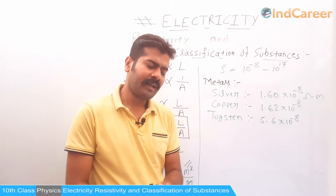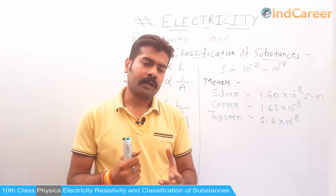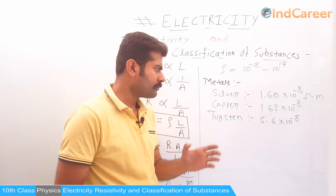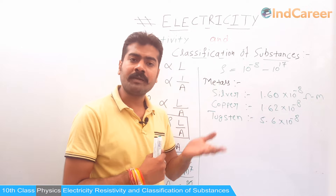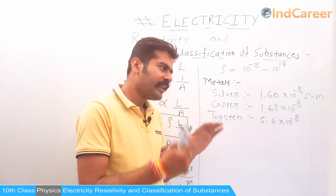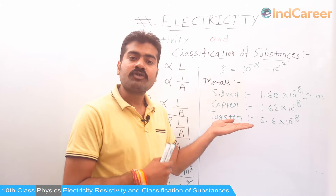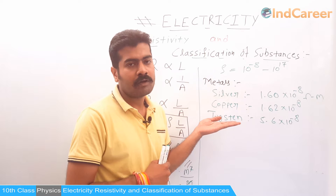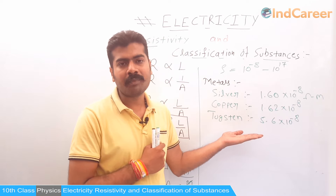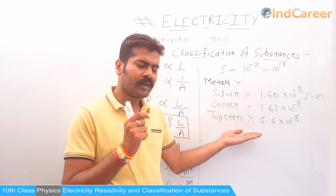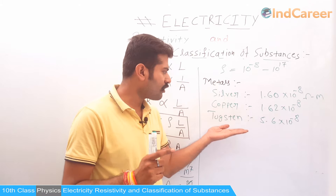A common exam question asks which material is preferred for electrical transmission lines. As per resistivity values, silver should be used — but silver's availability is very limited and it is a very costly material. Copper, which has resistivity just next to silver and is available cheaply, is the economical choice for transmission lines. Tungsten is mentioned here because it is used as the filament in bulbs, which we will discuss further in the next video.